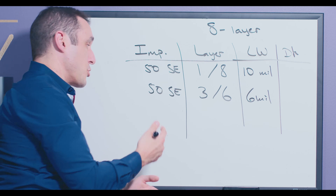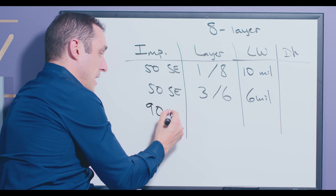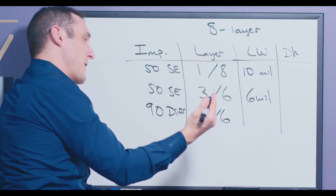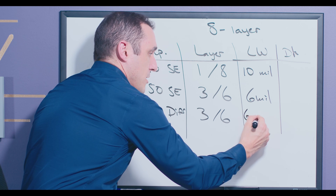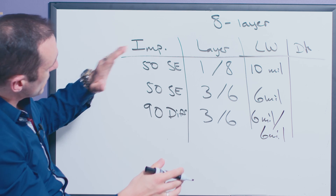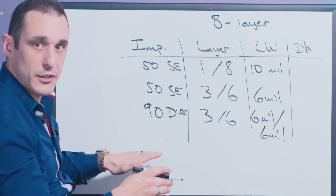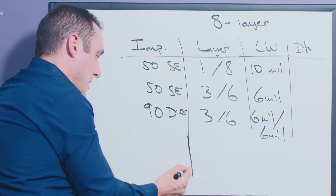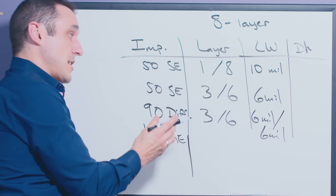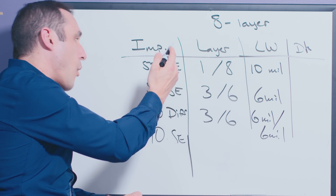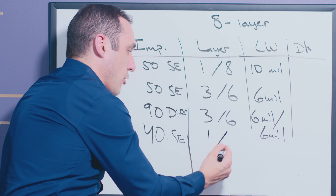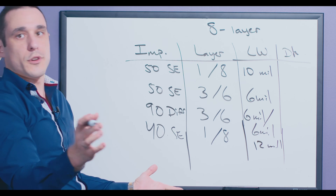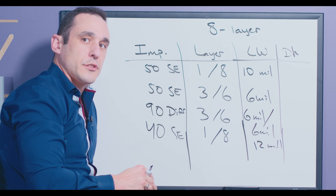They could also give you, for example, differential pairs. Let's suppose we have 90-ohm differential on layers three and six, and in this case they may specify a six mil line width with six mil spacing. They'll continue filling in values in this table until they've filled up all the available signal layers for the impedances that you require. Sometimes you don't just have 50 ohms single-ended — maybe you have 40 ohms single-ended. For example, if you have DDR and it has a different drive strength that doesn't require 50-ohm single-ended, you might have this on layers one and eight with another entry on layers three and six, and this one might have a 12-mil wide requirement.